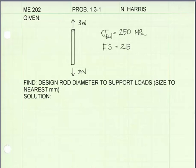I will begin by first finding the allowable stress for the rod. Allowable stress is found by taking the failure stress, which in our case is 250 megapascals, and dividing it by the factor of safety, which is given to us as 2.5. This results in an allowable stress of 100 megapascals.